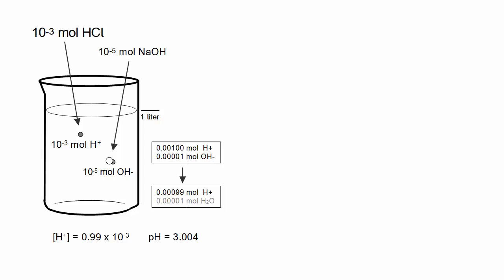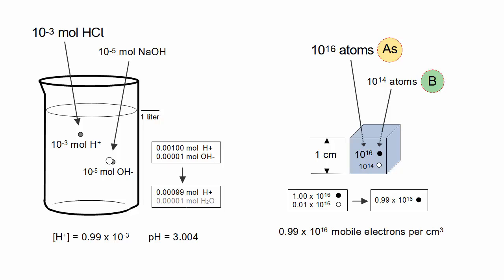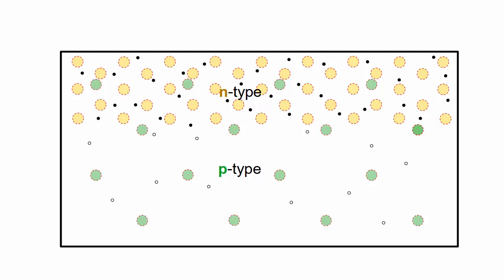For the same reason, if you add 10 to the 16 atoms of arsenic and 10 to the 14 atoms of boron to a cubic centimeter of silicon, the effect is nearly the same as adding just the arsenic. This makes it practical to fabricate adjacent regions having opposite types of mobile carriers.